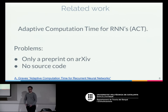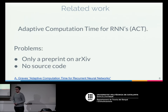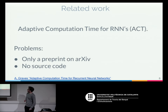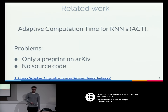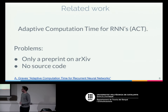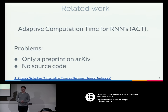One of the more promising works on adaptive computation time is the one we worked on: adaptive computation time for recurrent neural networks from Alex Graves, a researcher at Google Brain. The main problem with this work was that there was only a preprint on arXiv and no source code, so we had to implement it ourselves.